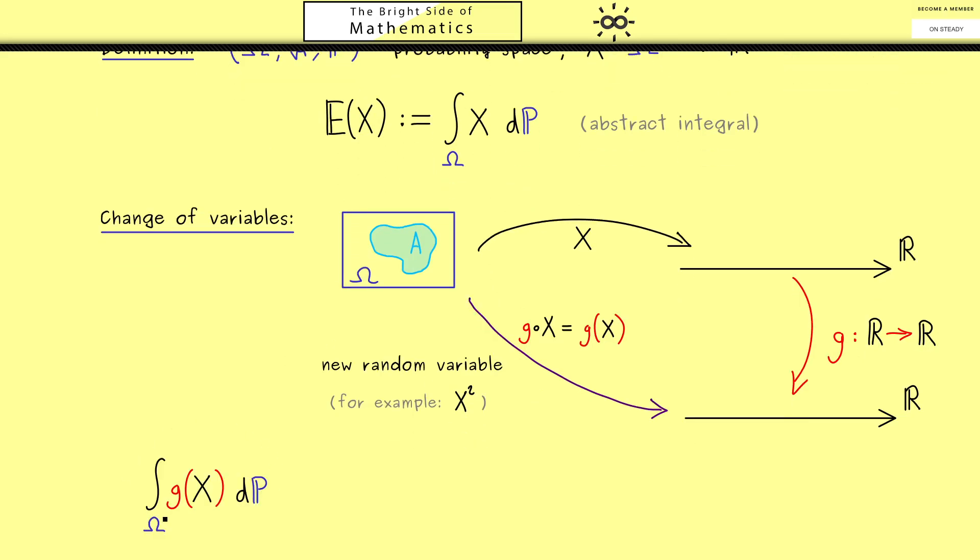The starting point is this abstract integral, now with the function g(X). Again, if you don't know what this means, it's no problem at all. You can see it as a symbol, and what follows will be a symbolic calculation. But first, I want to change the domain here to the set A. Then the formula is just more general.